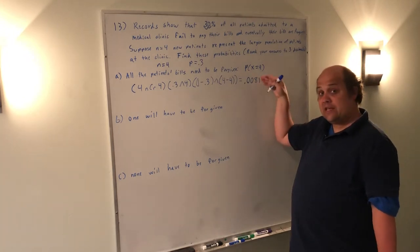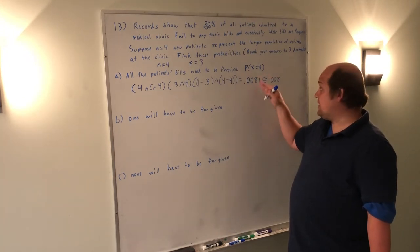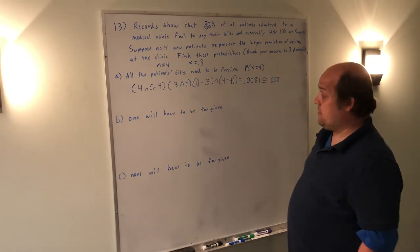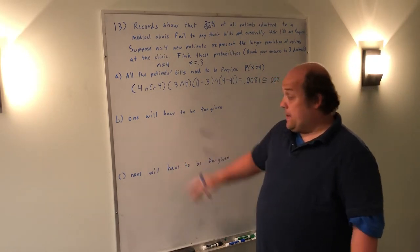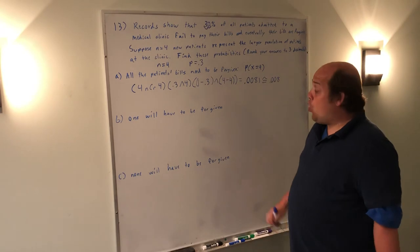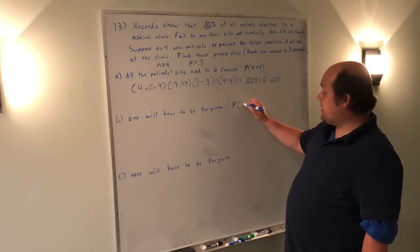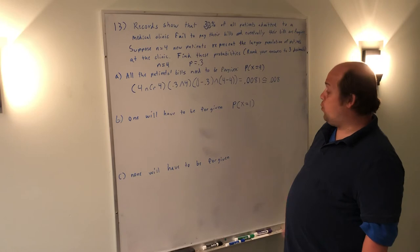So I would just call that 0.008. Since what we're dropping, the one, is four or less, it can just drop and go away. Part B asks, what's the probability that one bill will have to be forgiven? So what it's asking is, what's P of X equals one?